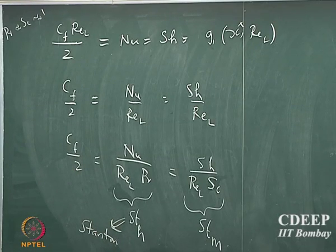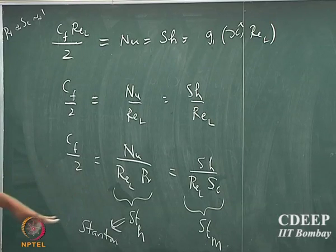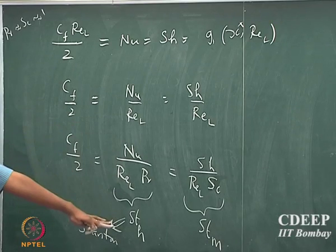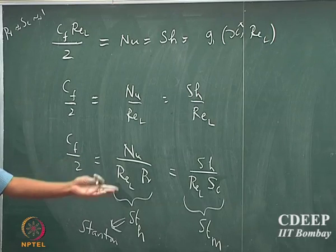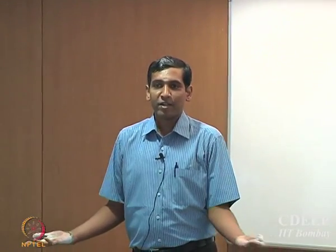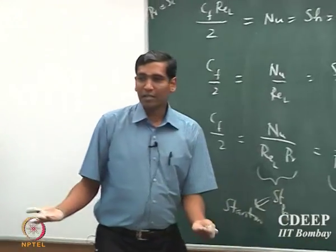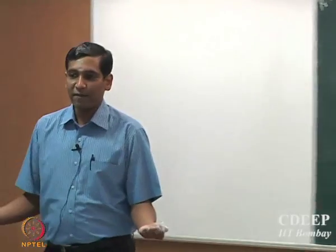You will start seeing all kinds of dimensionless numbers that will start appearing hereafter. You are not expected to remember all the expressions for these dimensionless numbers, but what would be useful is if you attempt to understand what each of these numbers signifies. For example, Nusselt number is the resistance to conduction in the fluid divided by resistance to convection across the interface. Similarly, Prandtl number is the ratio of momentum diffusivity to thermal diffusivity.